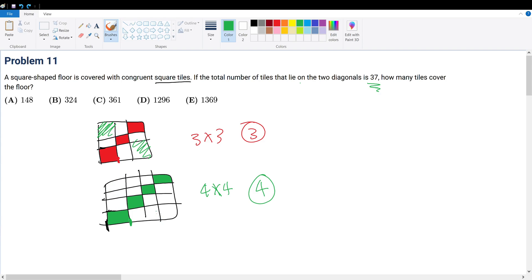Well, the total number of squares that lie on the two diagonals is 37. How many total blocks are on the two diagonals? We have 1, 2, 3, 4, 5—we have 5 total. How many are here? 1, 2, 3, 4, 5, 6, 7, 8—we have 8. So what we can conclude is: if the dimensions of the square are even by even, you must have an even number of total tiles that lie on the two diagonals. But if it's an odd by odd case, then we have an odd number of total tiles.